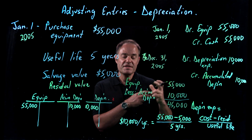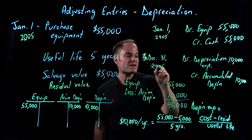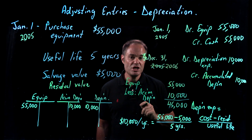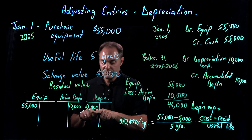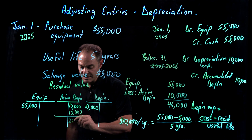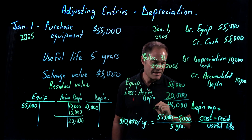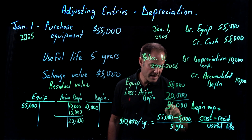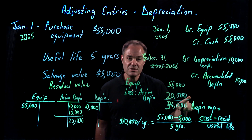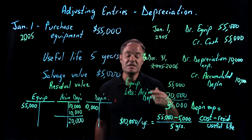Just like with prepaid or unearned revenue, this continues every year. On December 31st, 2006, the company records another year of depreciation expense of $10,000, adding another $10,000 to Accumulated Depreciation, so it's now $20,000. At the end of the second year, Equipment of $55,000 minus $20,000 Accumulated Depreciation leaves $35,000 net asset value.